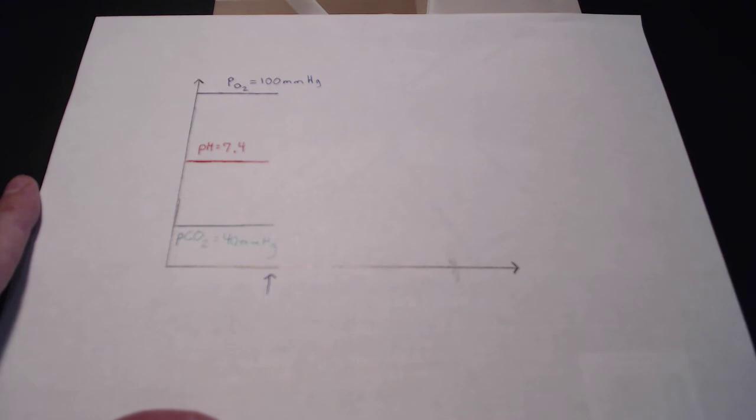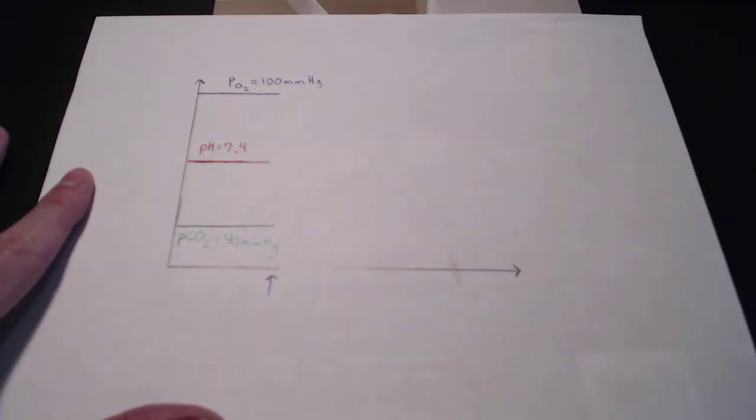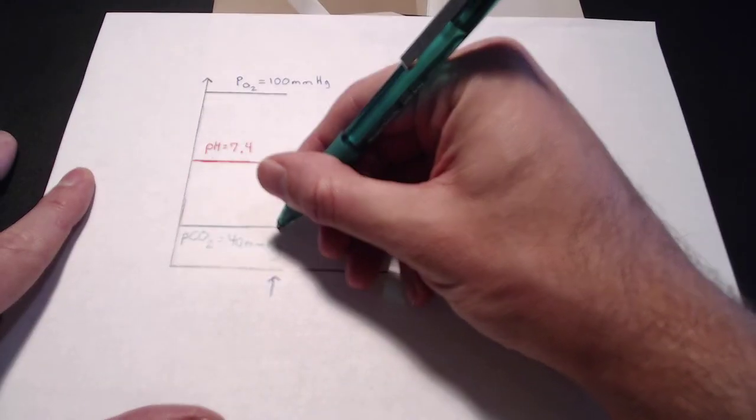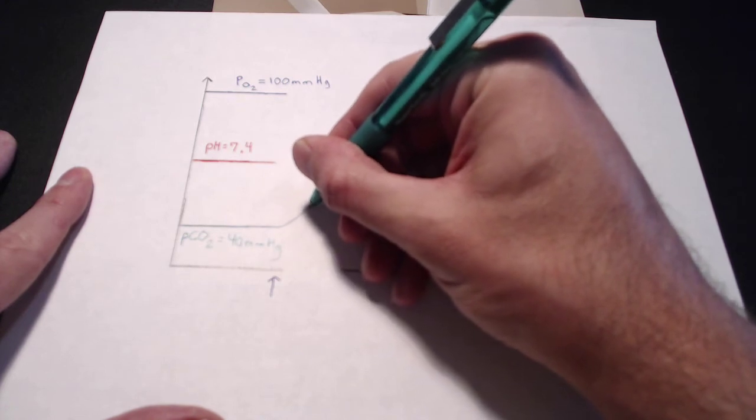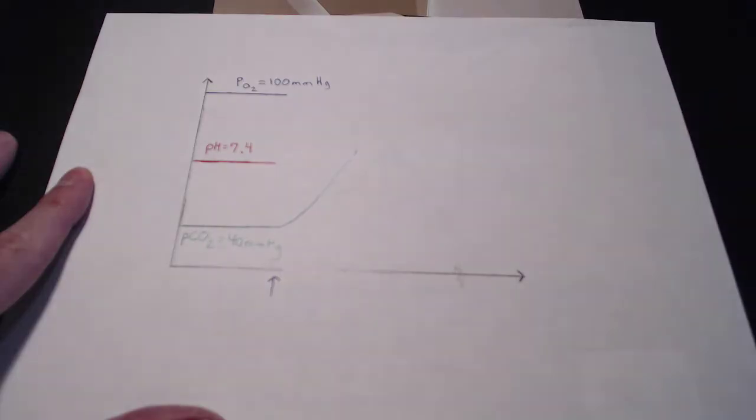So let's start with carbon dioxide here. So the whole purpose, one of the two purposes of ventilation is to get carbon dioxide out of the body. So if we are not ventilating enough, we can expect our PCO2 values to start to climb. So what we're gonna see here is over time, the PCO2 is going to start going up like that.